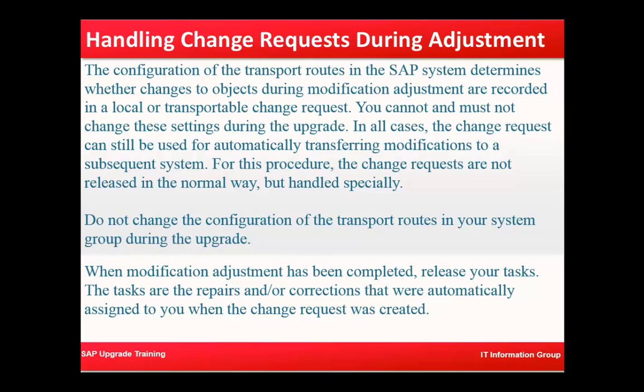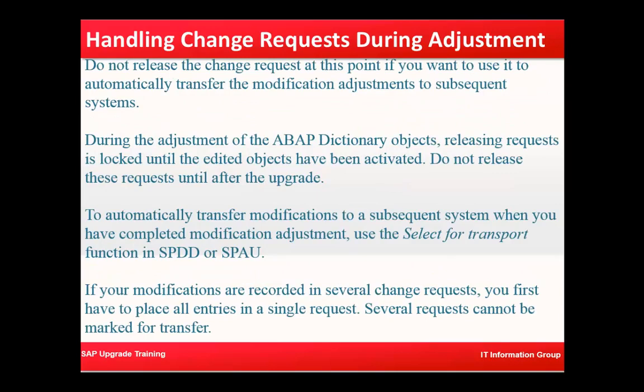Do not change the configuration of the transport routes in your system during the upgrade. When modification adjustment has been completed, release your tasks — the tasks are the repairs and corrections automatically assigned to you when the change request was created. Do not release the change request at this point if you want to use it to automatically transfer the modification adjustments to subsequent systems.